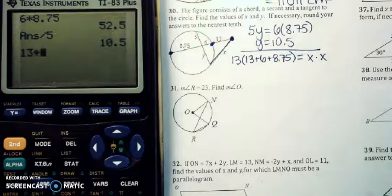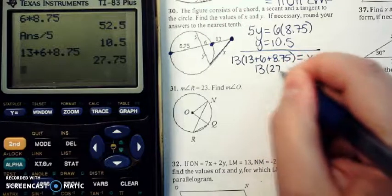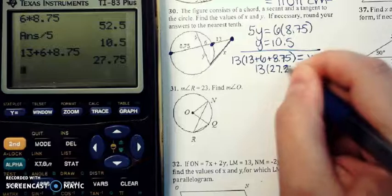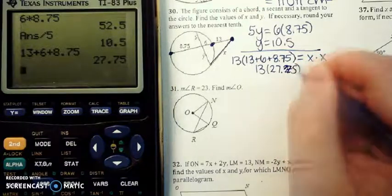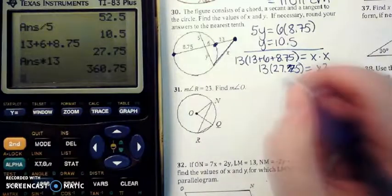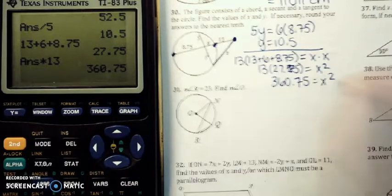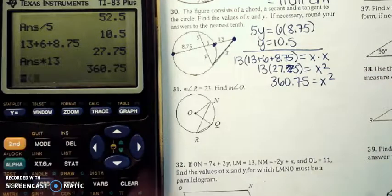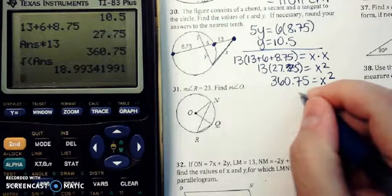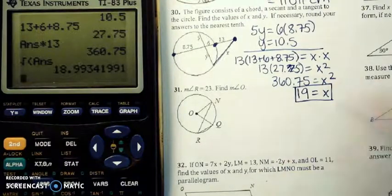So 13 plus 6 plus 8.75 here, we're going to get 13 times 27.75. Hopefully you guys can see that on the calculator is equal to x squared. So this is 360.75 equals x squared. Now I'm going to take the square root of that, and this is going to round up to be 19. So that's my x value there.